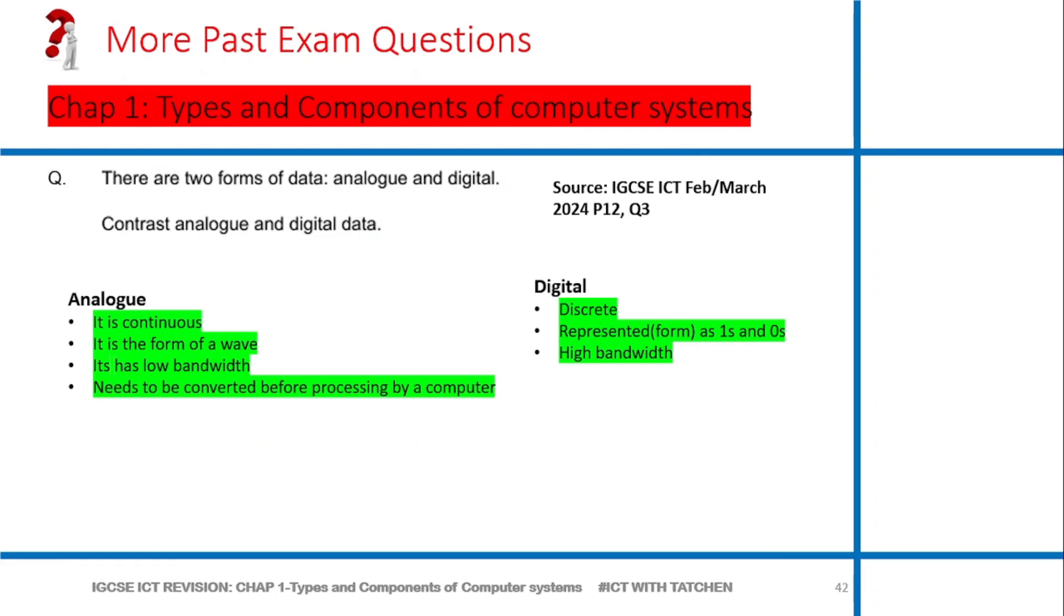The next question says there are two forms of data: analog and digital data. Contrast analog and digital data. When they say contrast, it means you should give differences between the two. You can just write analog and digital, give points between them. For analog, it is continuous, it doesn't have stepwise. Analog is like a sine wave, it is a form of a wave. It has low bandwidth, needs to be converted before processing by a computer. Digital is discrete, meaning it varies in steps. It's like in terms of ones and zeros. Digital has high bandwidth.